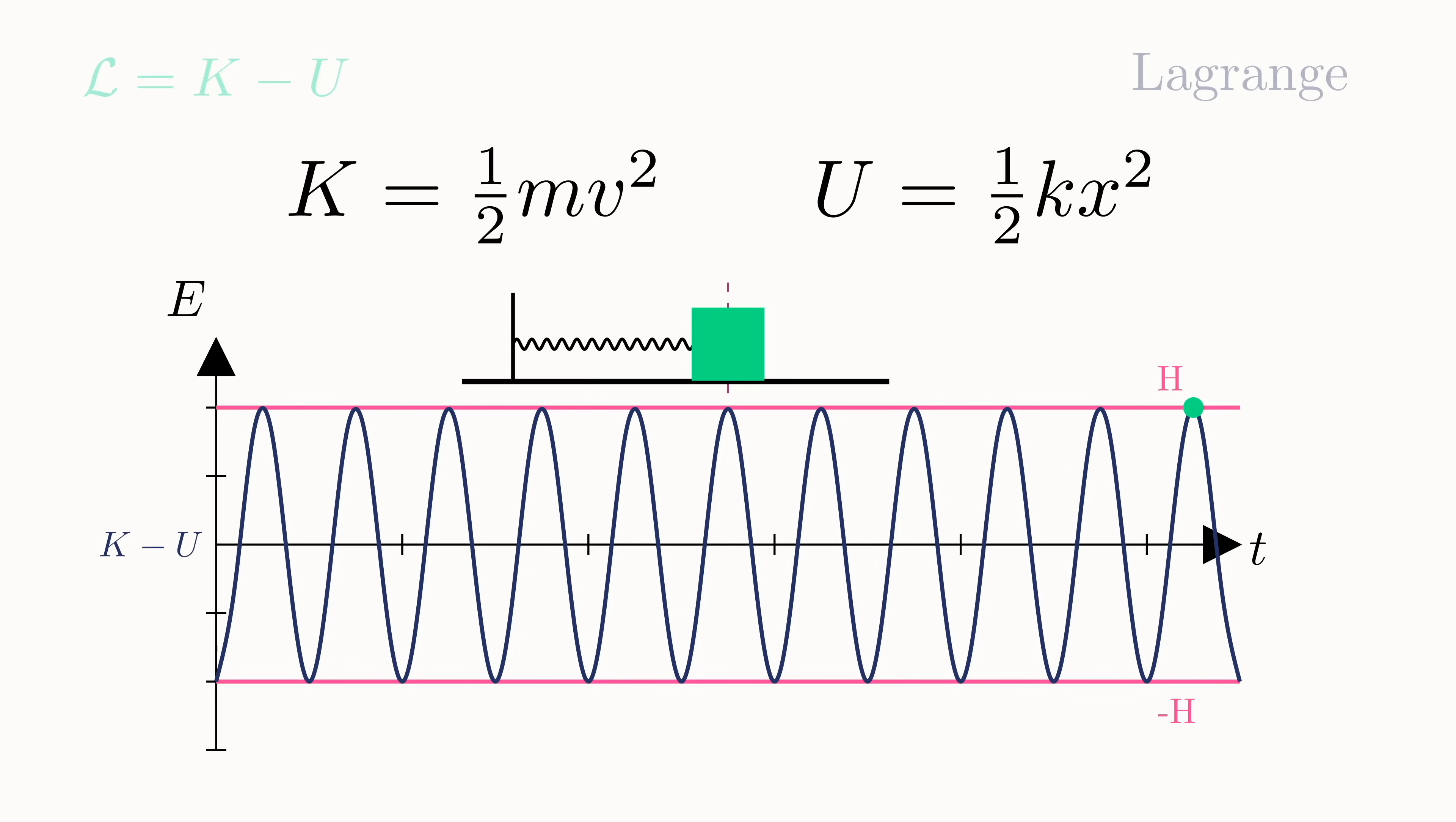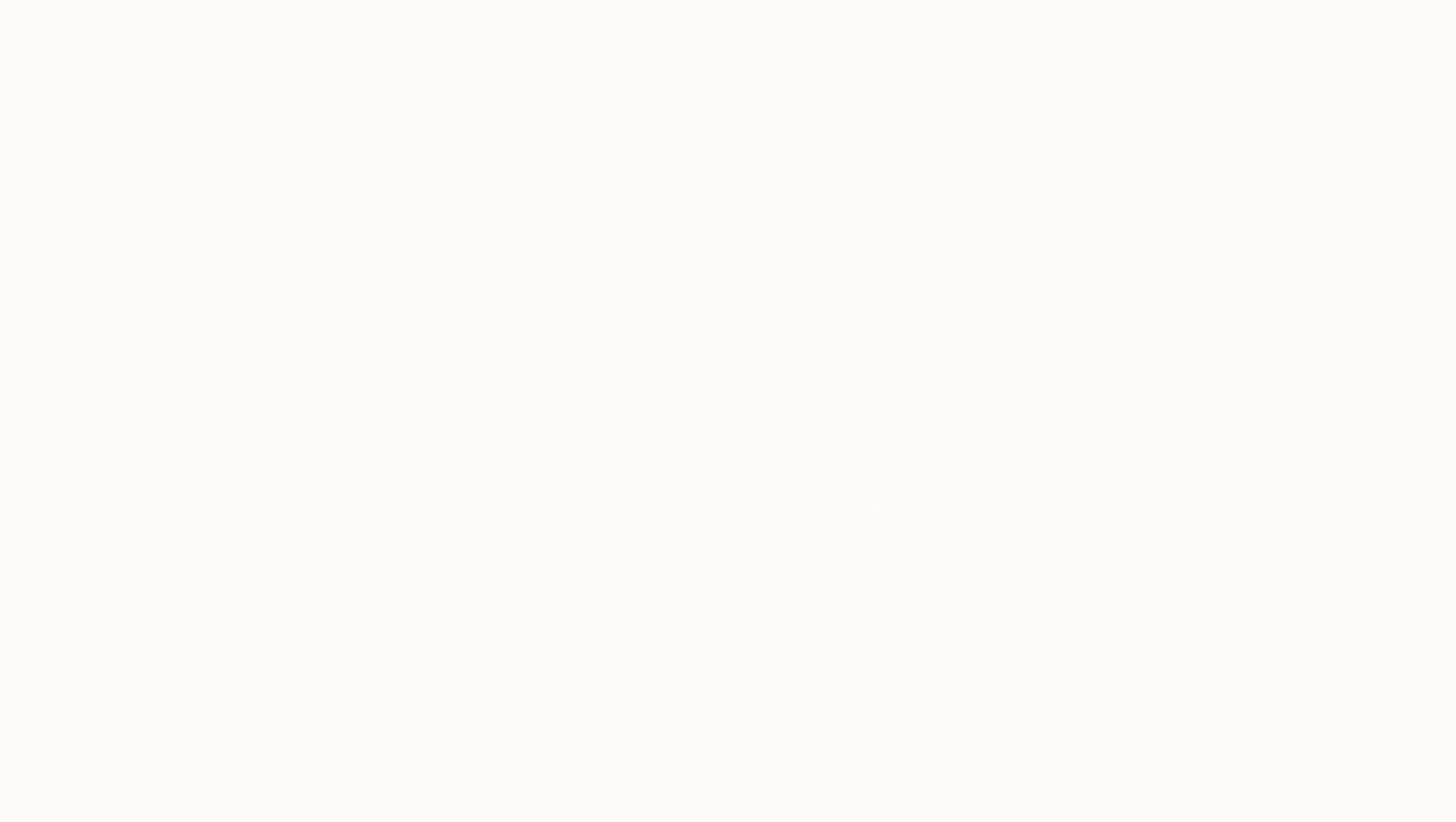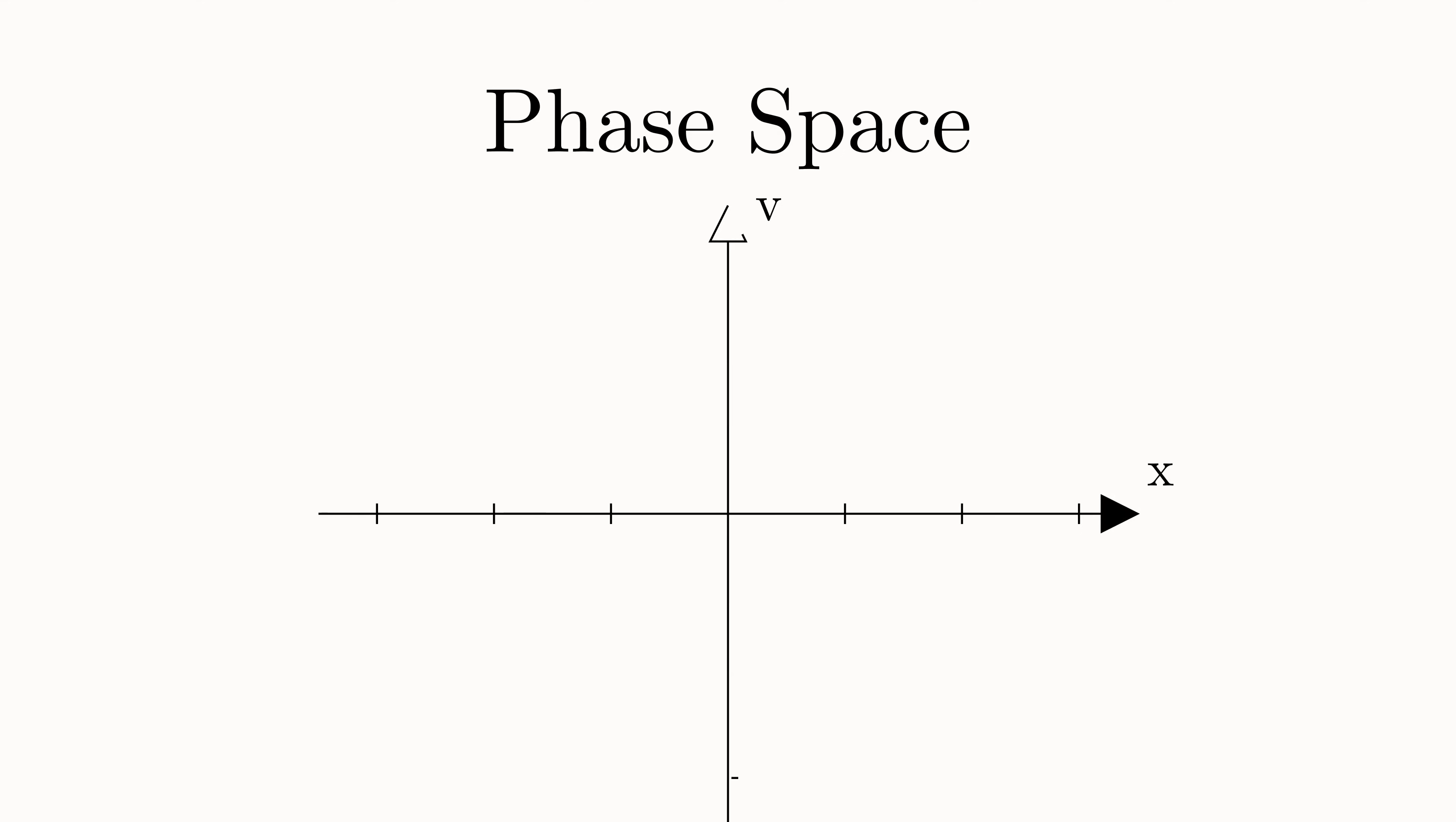First, we'll move over to something called phase space. We'll form a new plot here, where one axis is the position and the other axis is the velocity. We can now represent different states of our system by points in phase space. For example, at the start, when x equals d, the velocity is 0. So this state can be represented by the green dot.